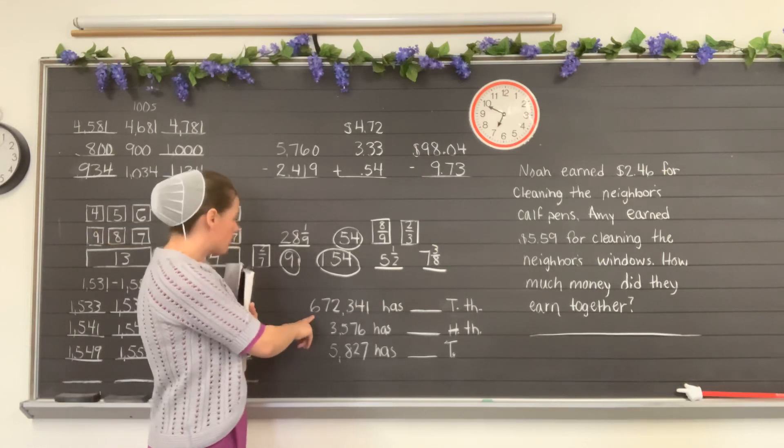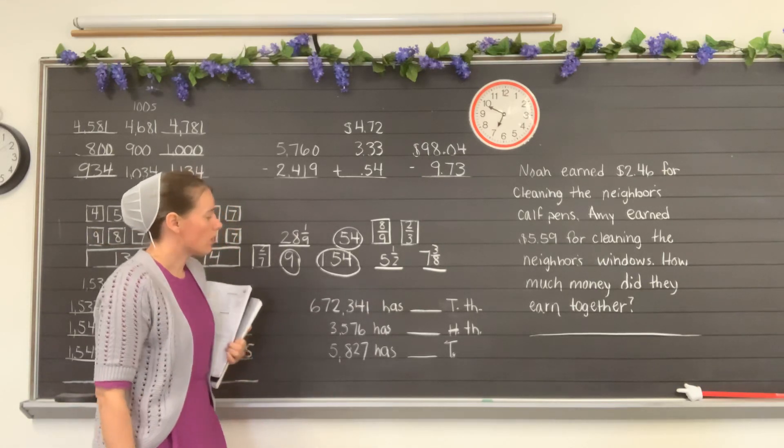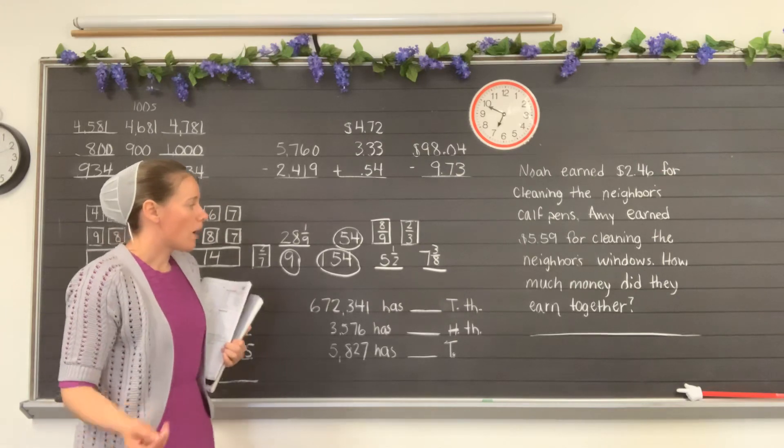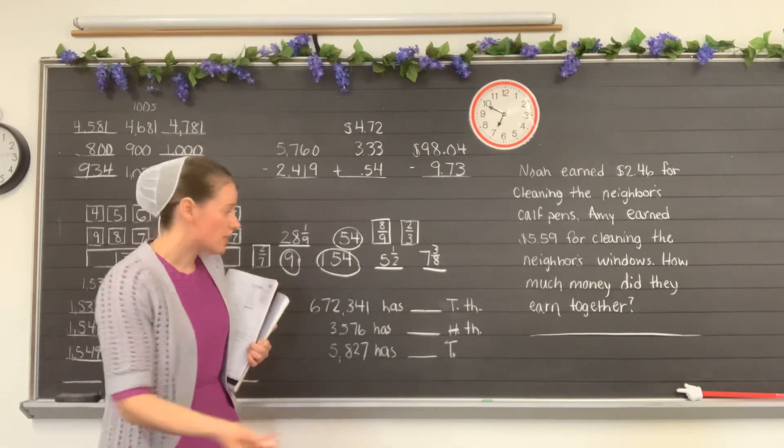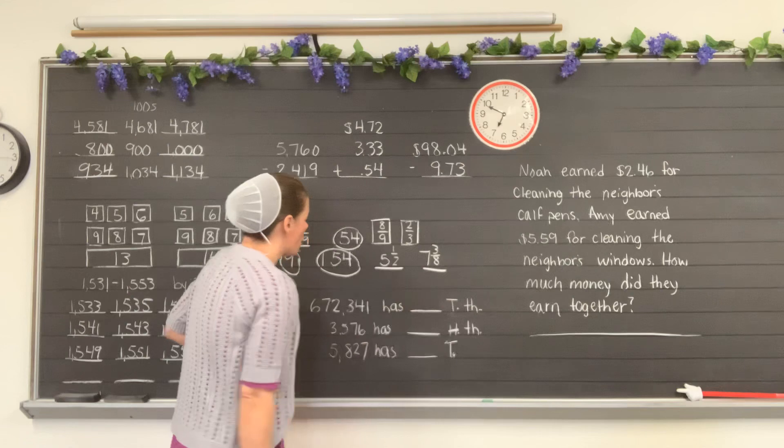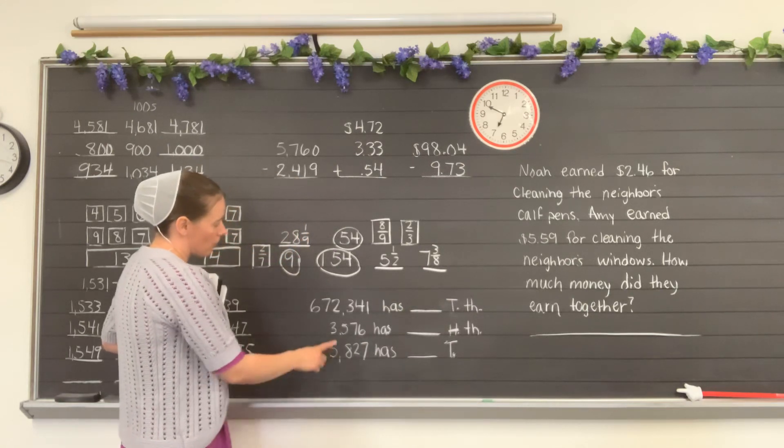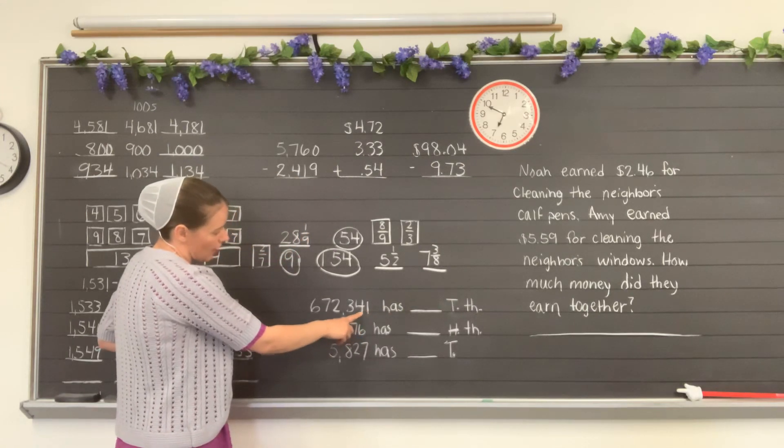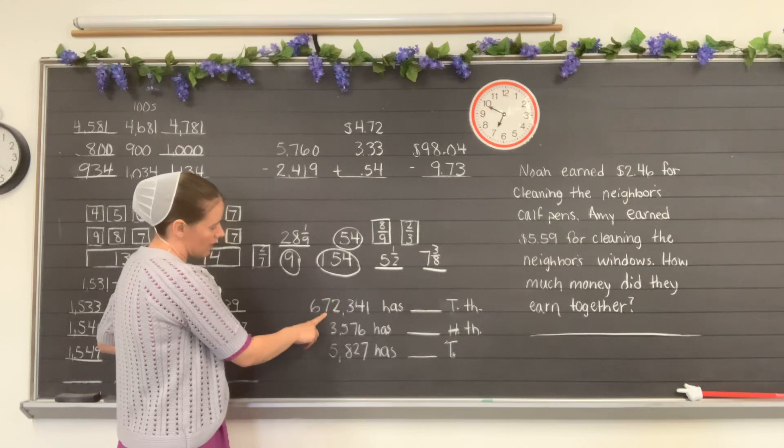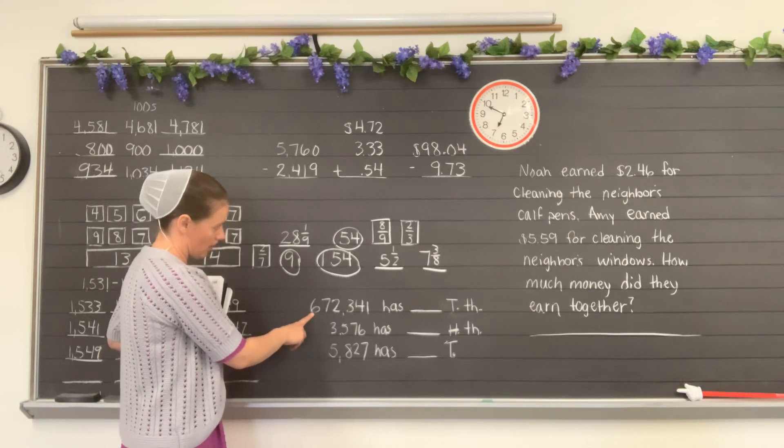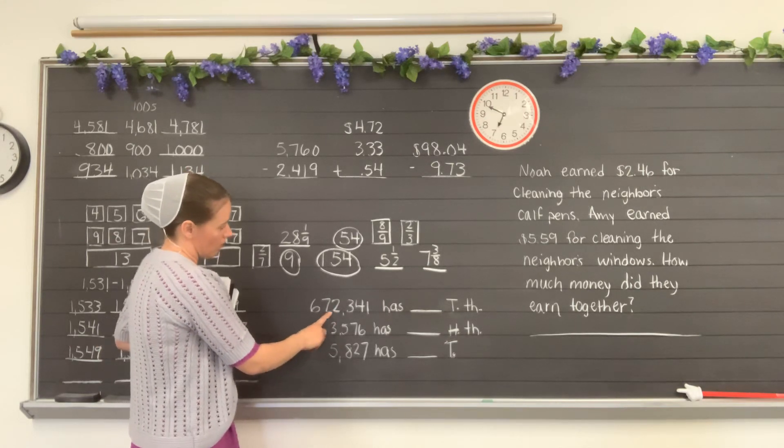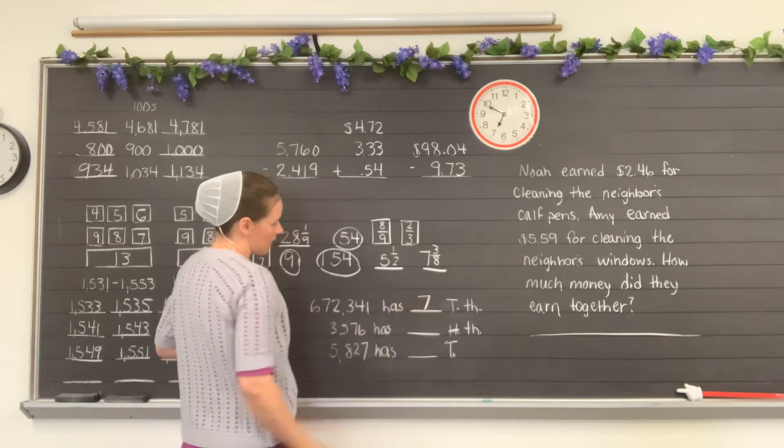Looking at these numbers here, we have 672,341 has how many 10,000s? This stands for 10,000s, so we look at the 10,000s place. This is ones, tens, hundreds, thousands, ten thousands, and hundred thousands. So 7 would be in the 10,000s place, so I'll write 7 in there.